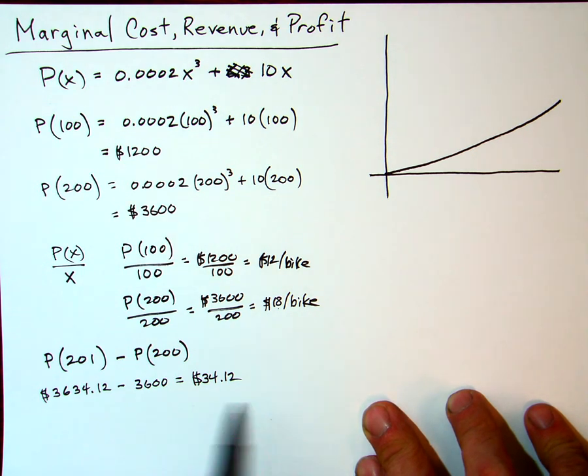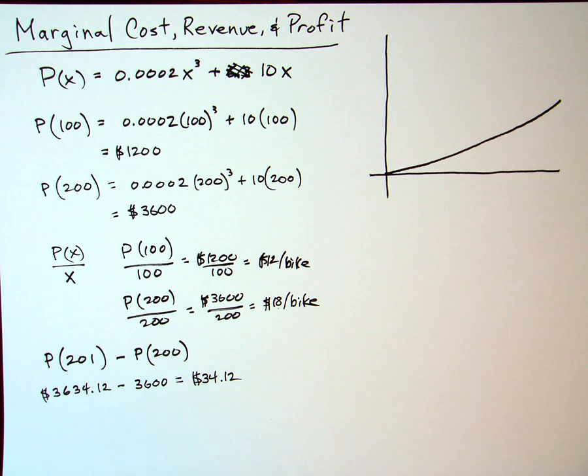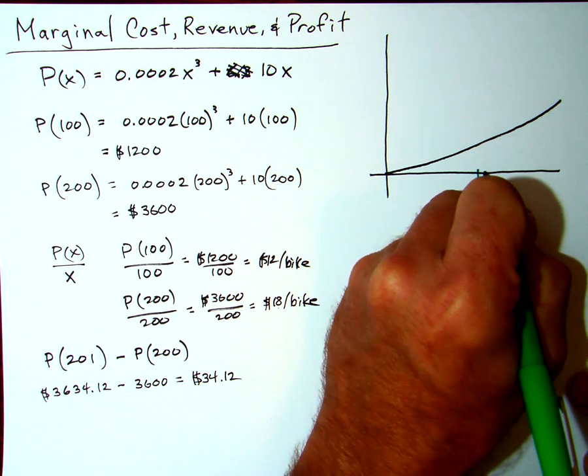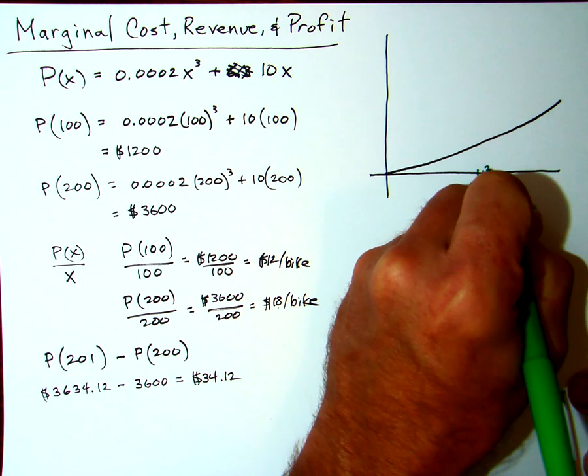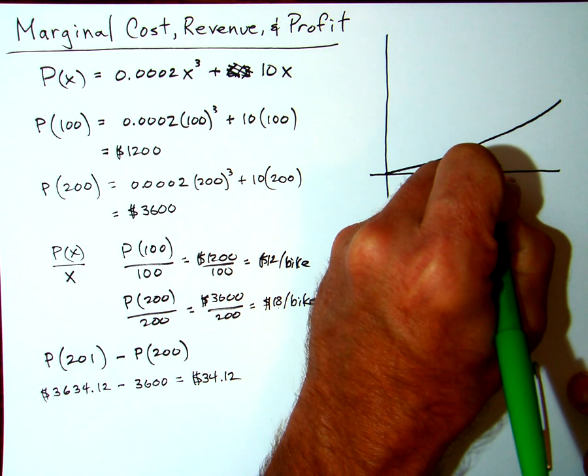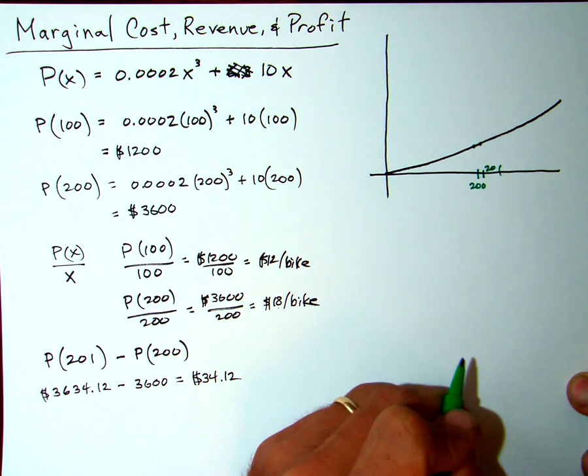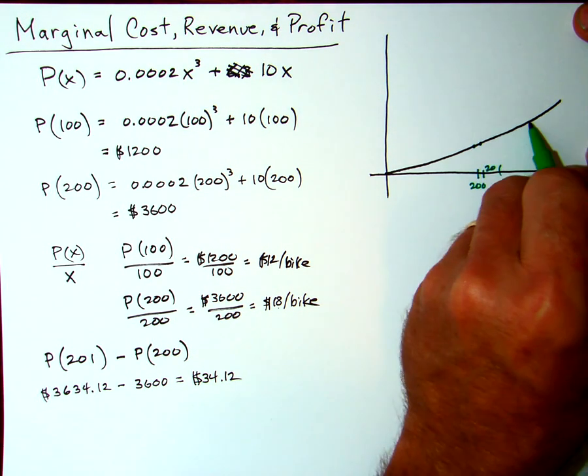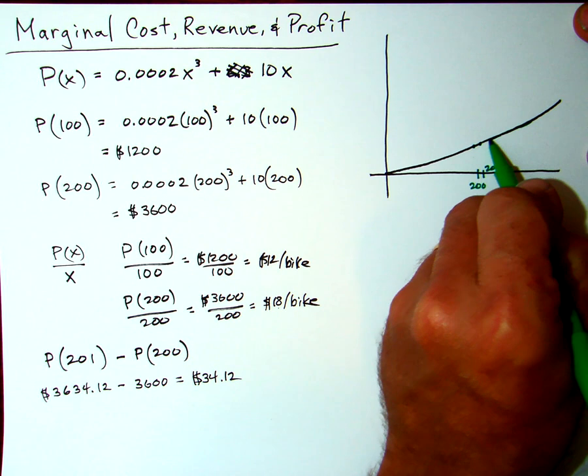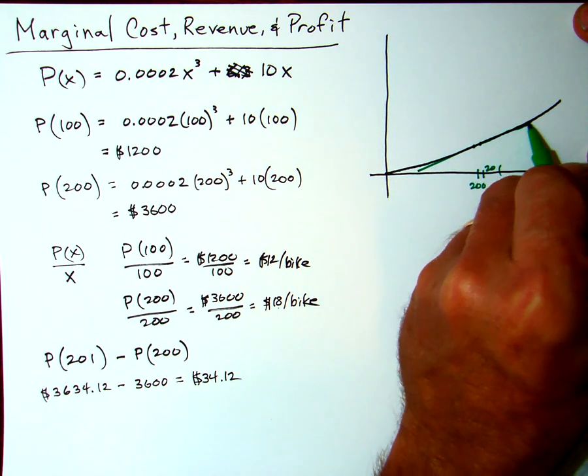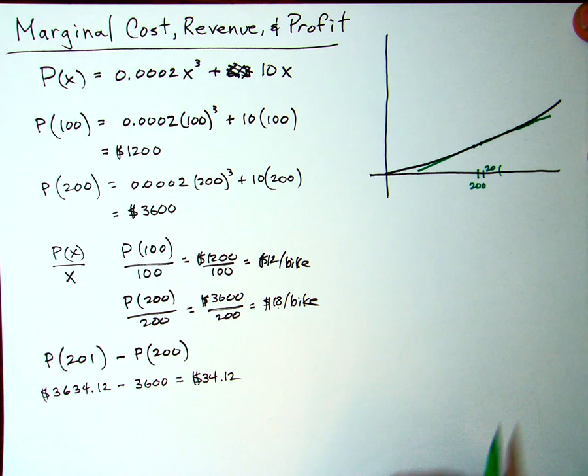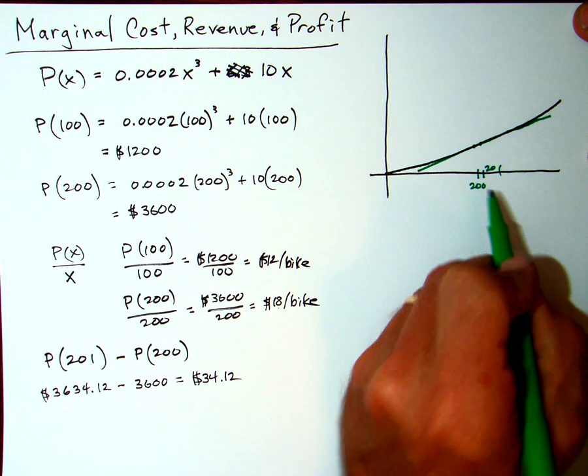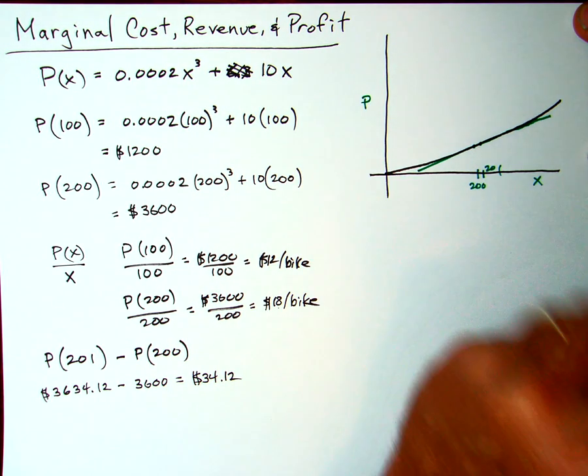How can we use calculus to estimate this? One way to think about this is if I have, here's 200 and right next to it, that's 201. Remember we said that for average rate of change, it's given by the secant line. So the secant line that goes through those points looks something like that. The slope of that secant line gives me the average rate of change of profit. This is my profit, here's x, my number of bicycles.